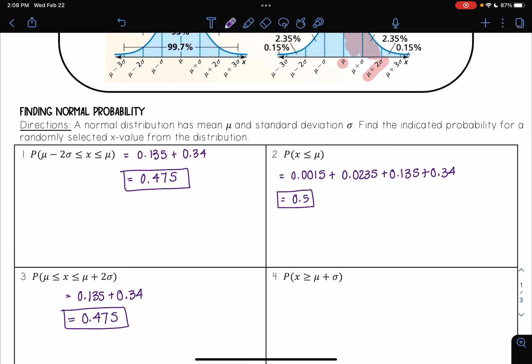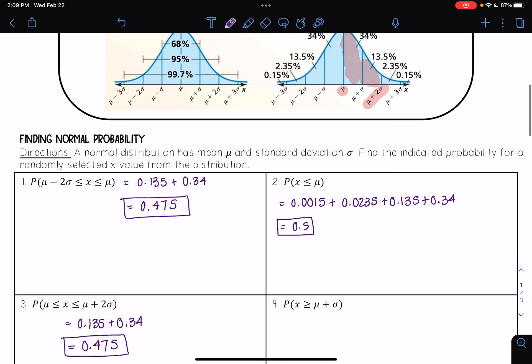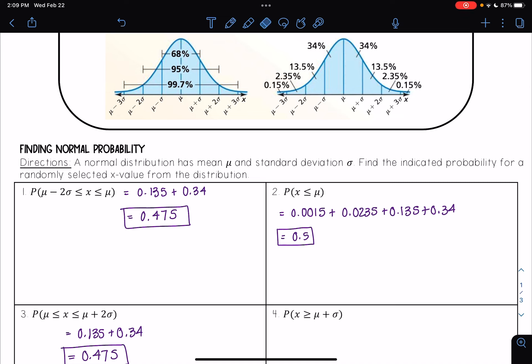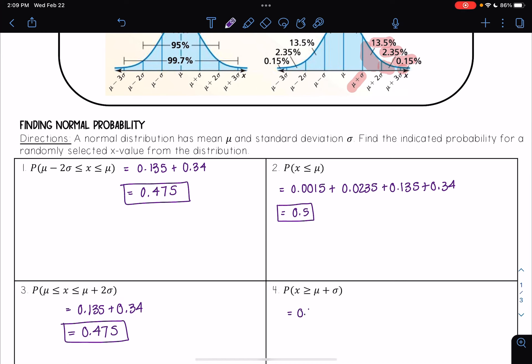And then looking at one last one here, I want to see the probability that x is now greater than or equal to μ + σ. So I see μ + σ here, and I want all values greater than it. So it's going to be these three areas: 13.5%, 2.35%, and 0.15%. And so adding those, it's going to be 0.135 plus 0.0235 plus 0.0015. And when I add all those together, I get 0.16.